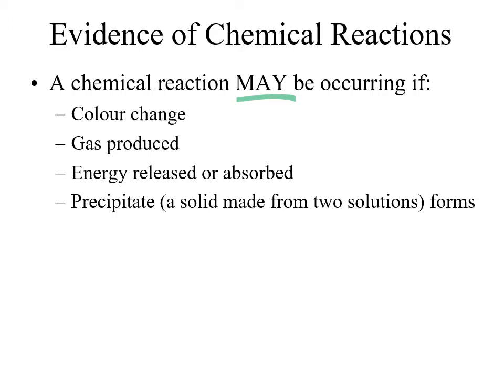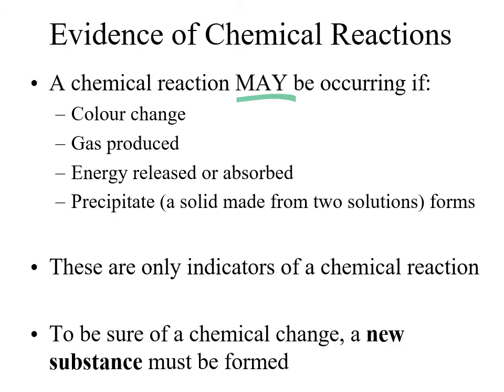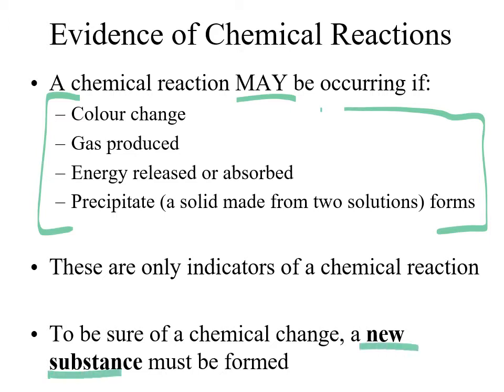These are all indicators. You could have physical changes with a lot of these same visual cues, so it's important to realize that these are indicators for a chemical reaction. To be sure that a chemical reaction is happening, you need to know that a new substance has been formed. All four indicators point to that, but you have to confirm a new substance was produced to confirm a chemical reaction.